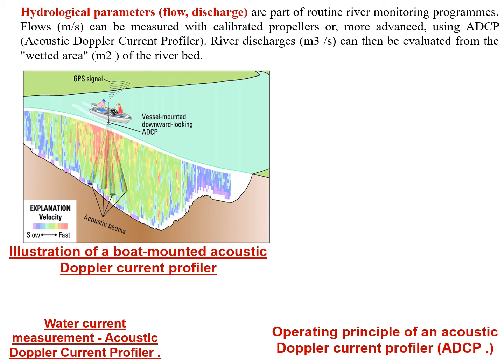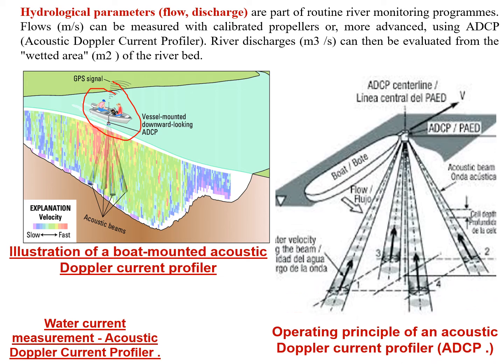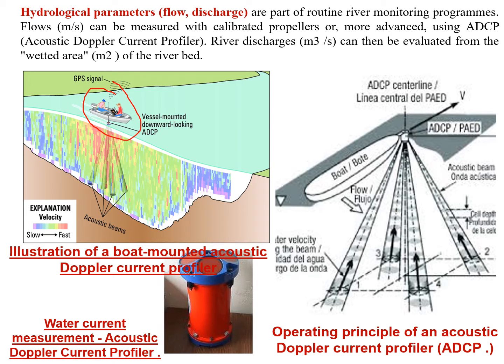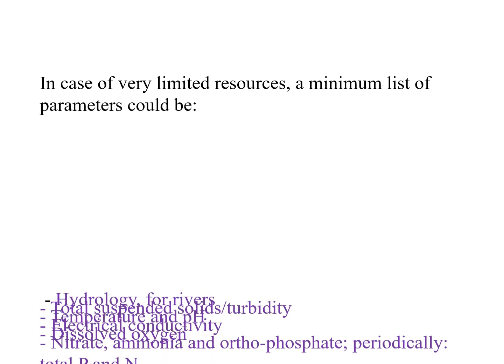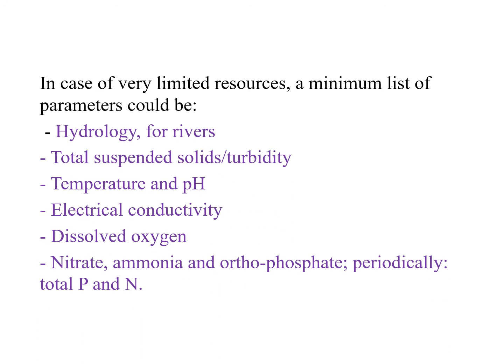This is the diagram of a boat-mounted Acoustic Doppler Current Profiler, showing its operating principle. In case of very limited resources, a minimum list of parameters would include hydrology for rivers, total suspended solids or turbidity, temperature and pH, electrical conductivity, dissolved oxygen, nitrate, ammonia, and orthophosphate.